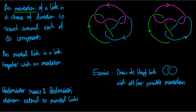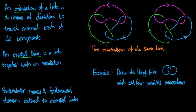So what is this a picture of here? This is a picture of two orientations of the same link. These two pictures show us two different orientations of the same link. An oriented link is a link together with an orientation. So this is a picture of a link with an orientation — an oriented link — and on the right, a link with a different orientation, so a different oriented link. These two pictures show two orientations of the same link, and also show two different oriented links.